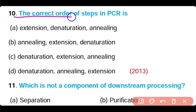Question 10: The correct order of steps in PCR is — extension, denaturation, annealing; or annealing, extension, denaturation; or denaturation, extension, annealing? Option D is correct. The order is: denaturation first, annealing second, and extension third.